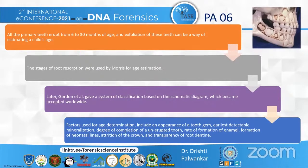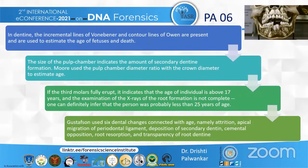Factors used for age estimation include the appearance of a tooth germ — that is, the tooth bud — which is the earliest detectable mineralization; degree of completion of an unerupted tooth; rate of formation of enamel; formation of neonatal lines; and transparency of root dentine. In dentine, the incremental lines of von Ebner and contour lines of Owen are present and used to estimate the age of fetuses. The size of the pulp chamber indicates the amount of secondary dentine formation. Moore used the pulp chamber diameter ratio with the crown diameter to estimate age.